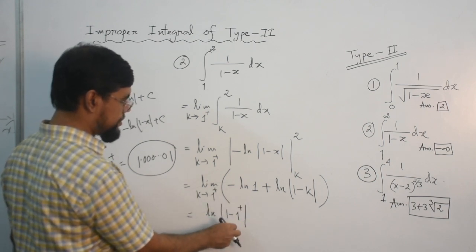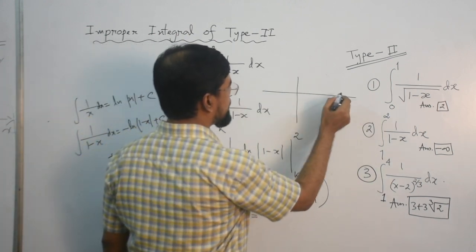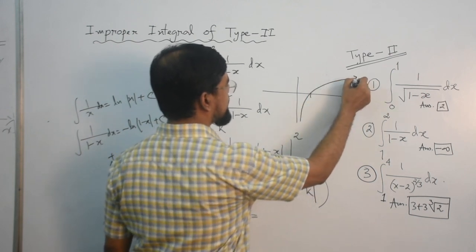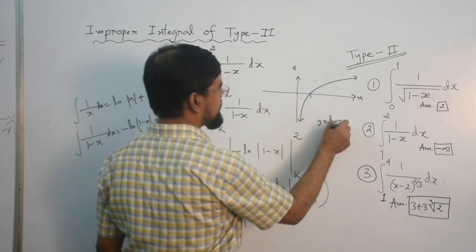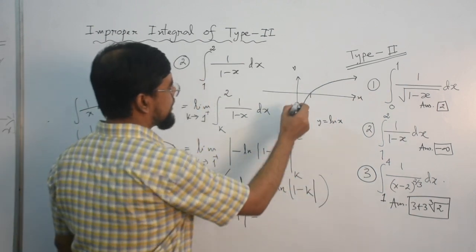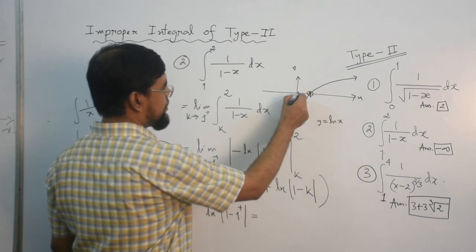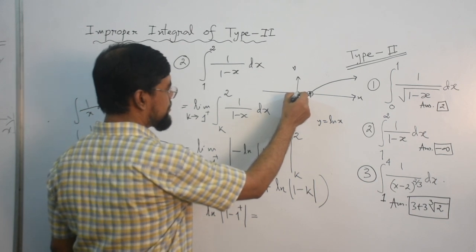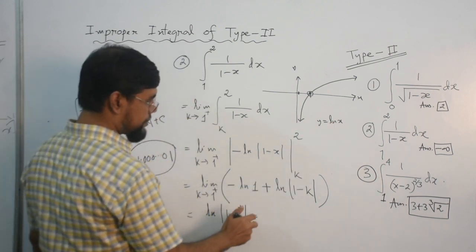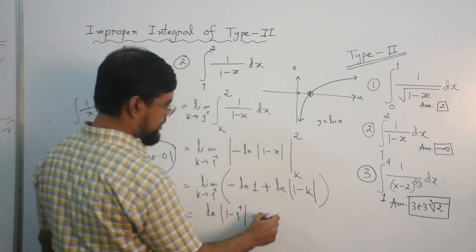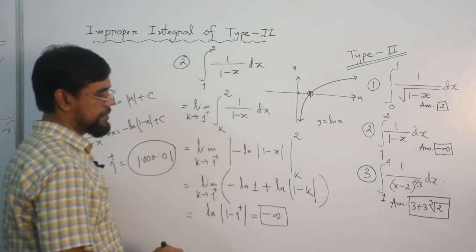Now putting k = 1⁺ means 1 minus 1⁺ is a very small negative number. With the absolute value it becomes a very small positive number. From the graph of the logarithm, when x approaches 0 from the right, ln x goes to negative infinity. So the result of this logarithm is negative infinity. This means the integral diverges to negative infinity — it has no value.